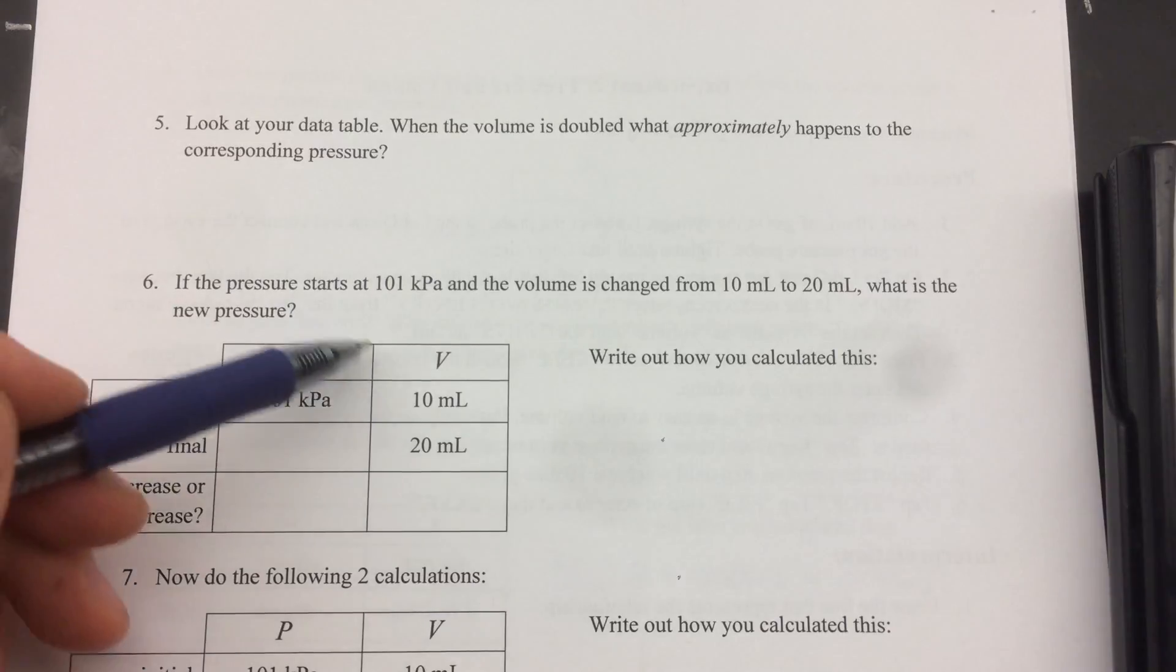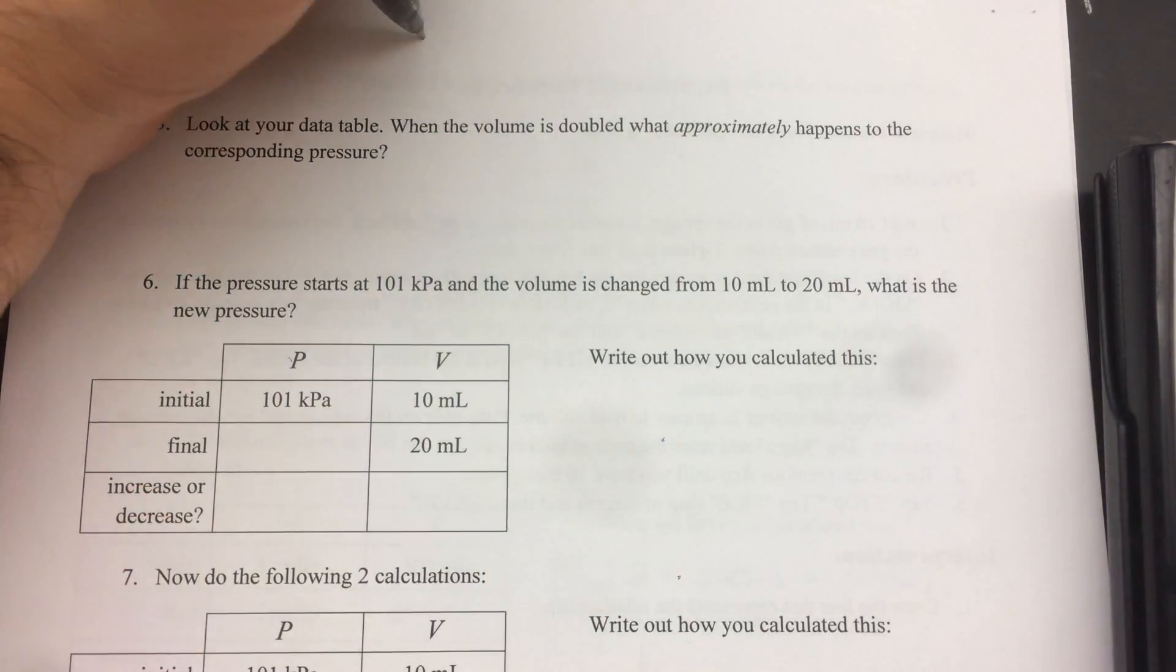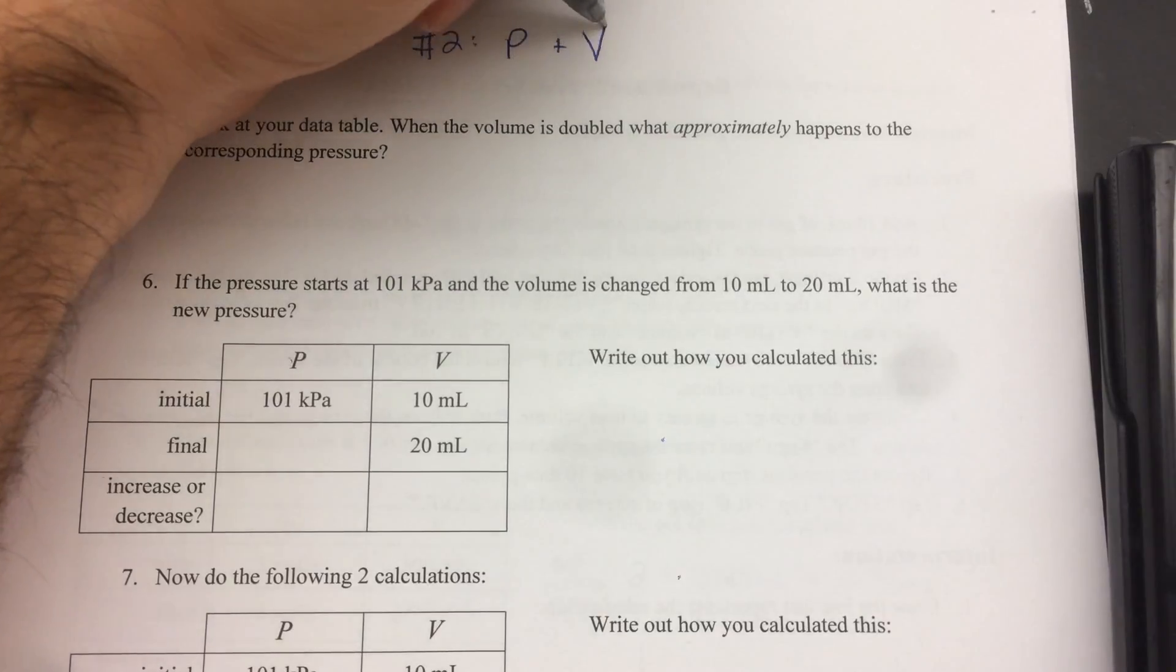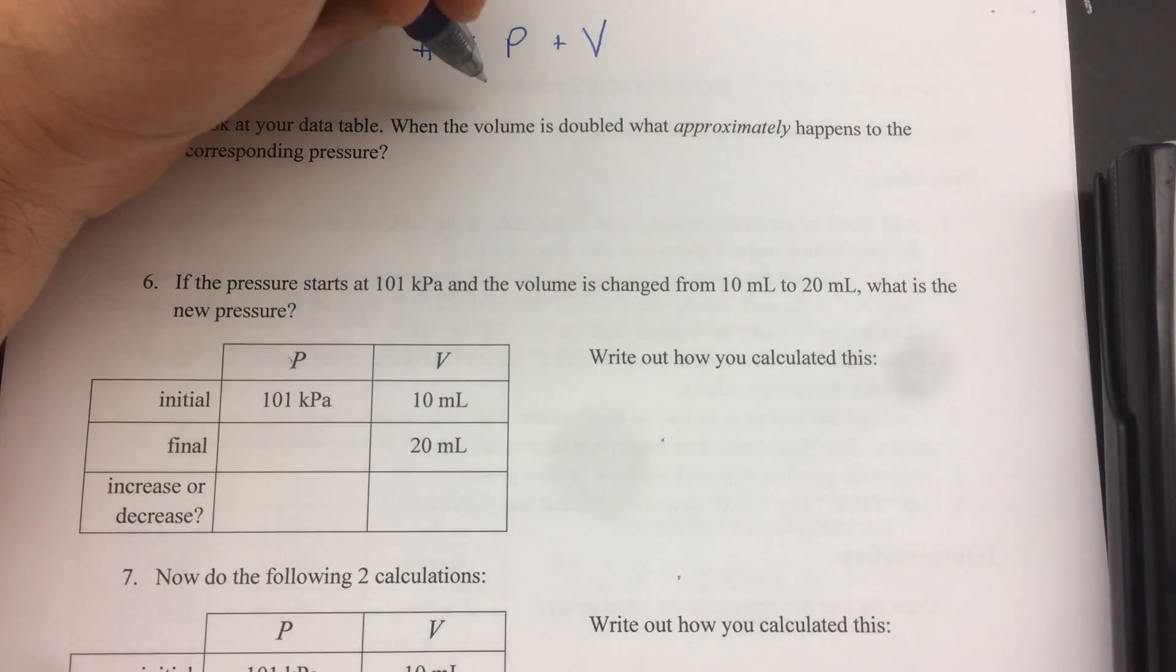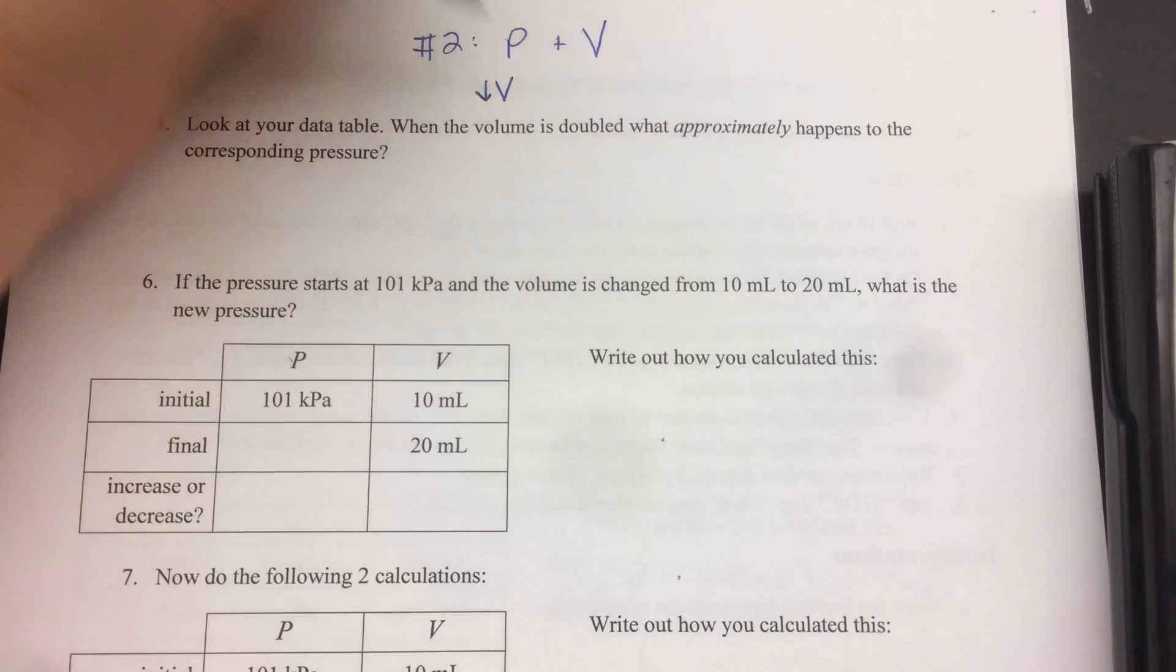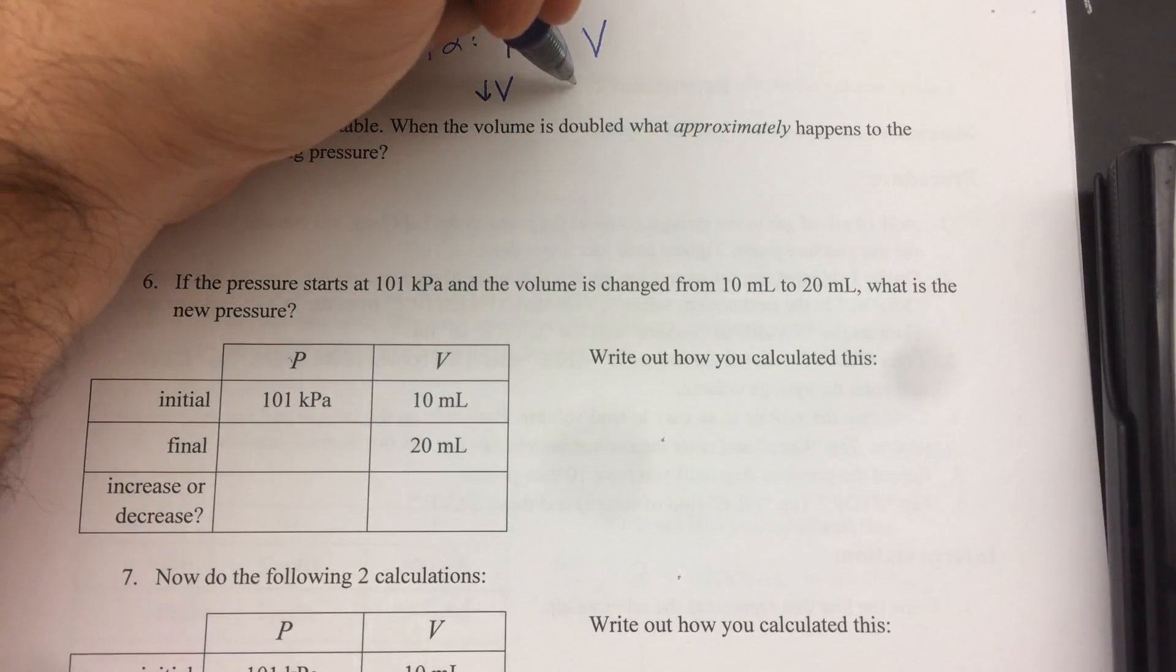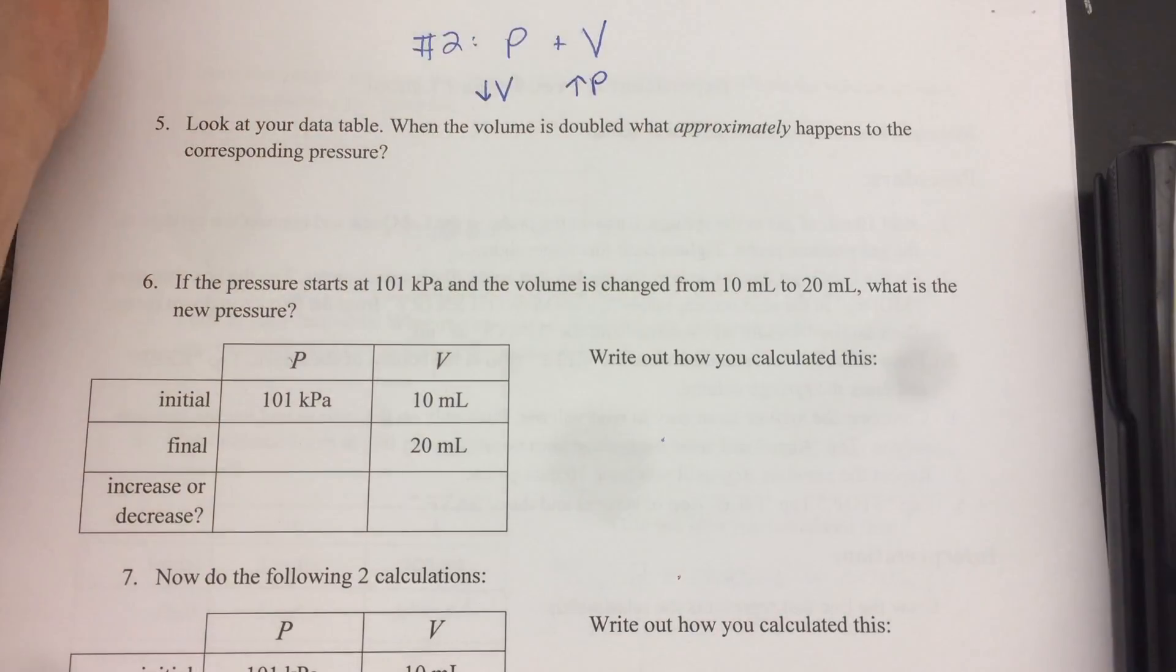This is for number two. This is for pressure and volume. So this is number two, pressure and volume. This is where you put the syringe on the pressure gauge and you change the volume. Now this relationship ended up being inverse. So what that means is if I decrease the volume, so if I make the gas smaller, it makes the pressure go up. And if you think about it, that's pretty sensible. If you squeeze a gas, you can feel the pressure build.